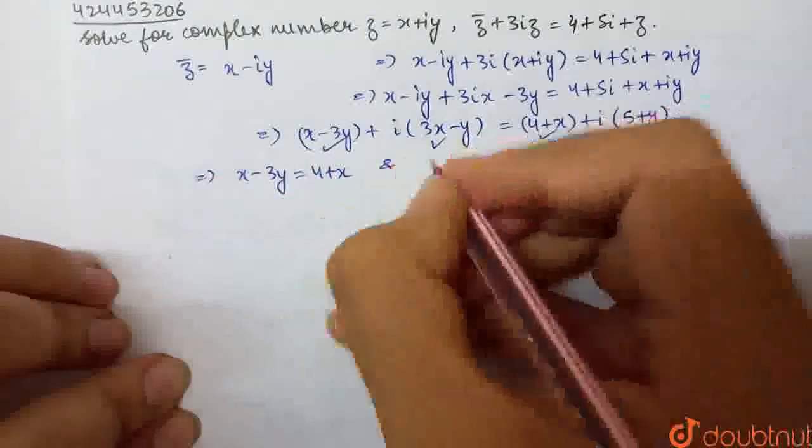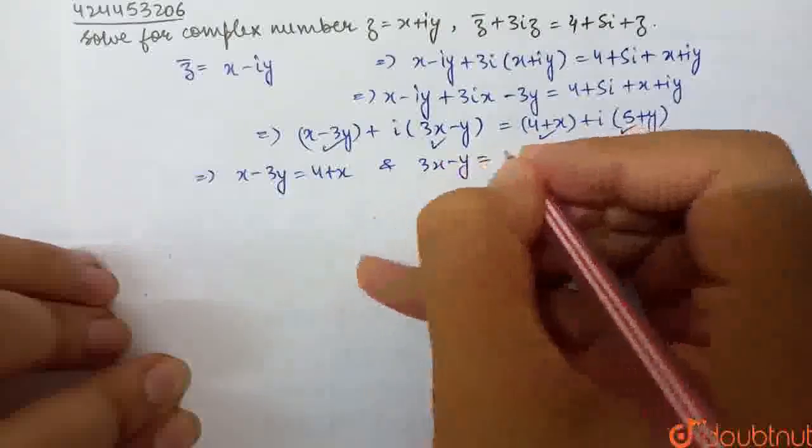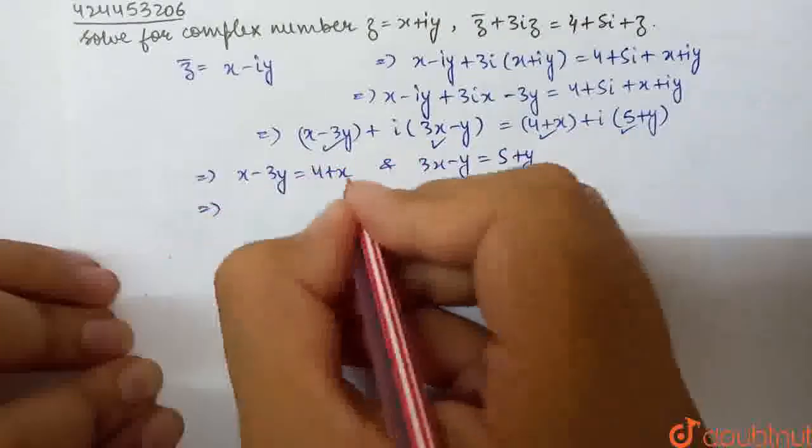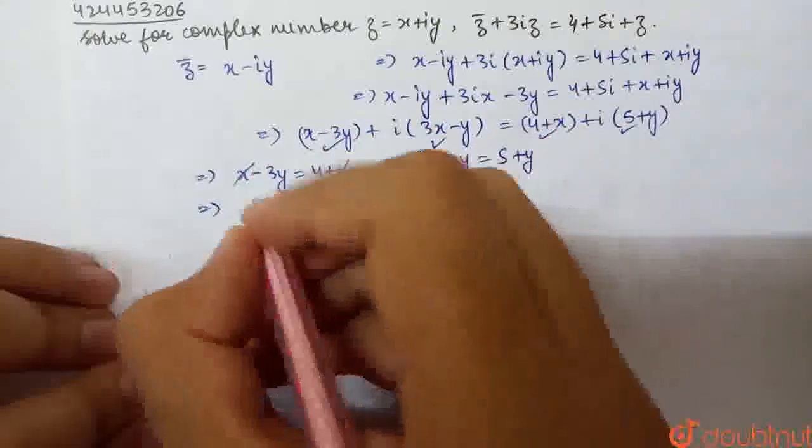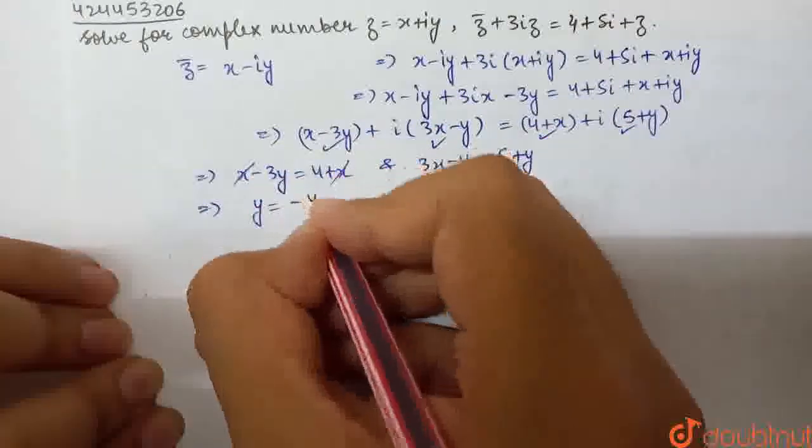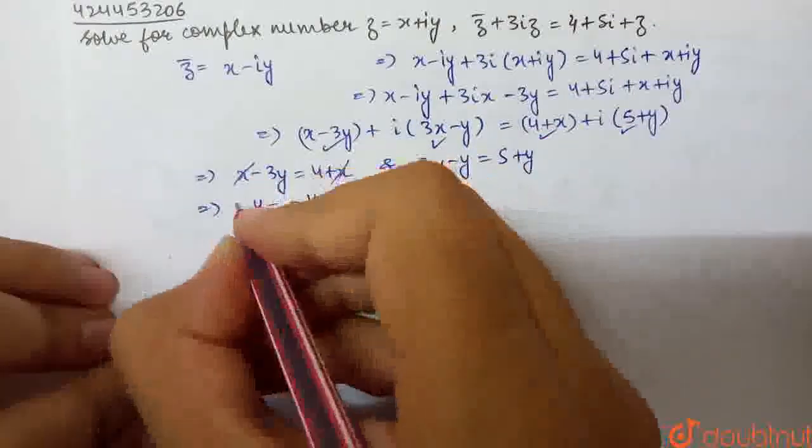So what can I say here? X minus 3Y is equal to 4 plus X, and 3X minus Y is equal to 5 plus Y. So X and X cancel out. Y, what have I got? Minus 4 by 3.